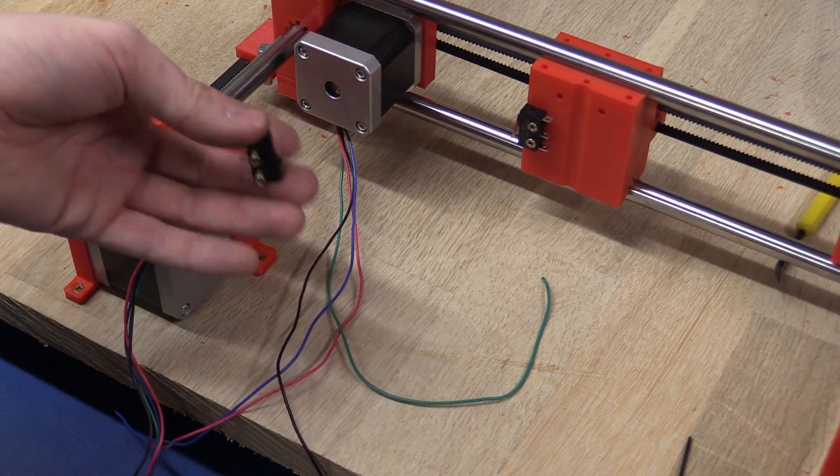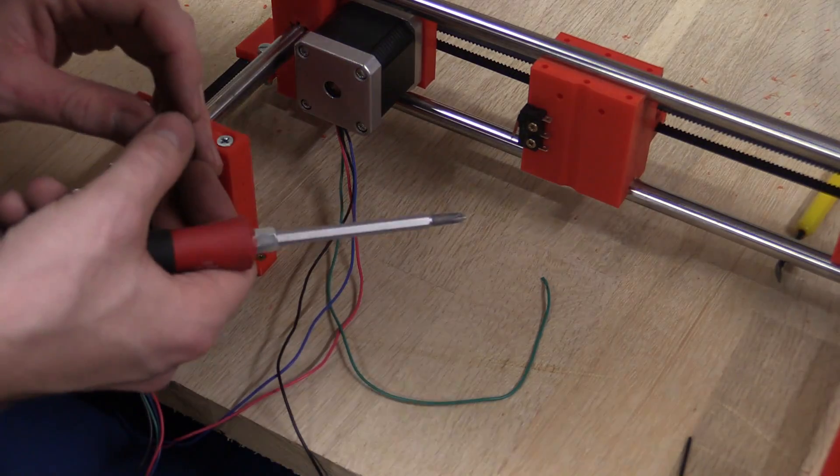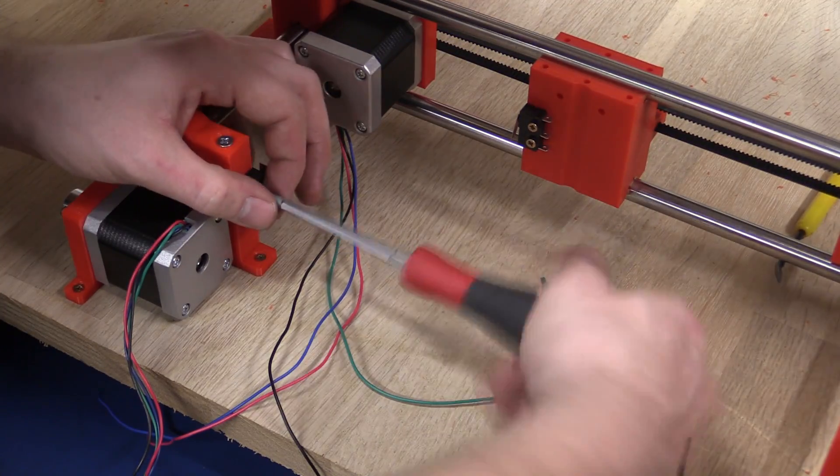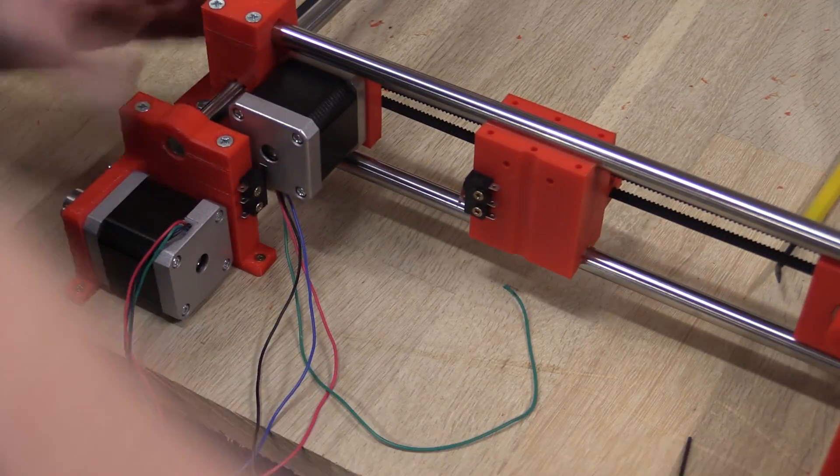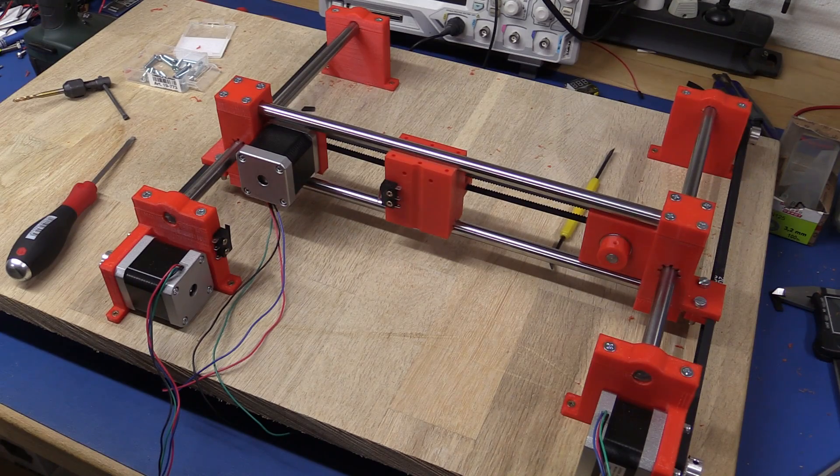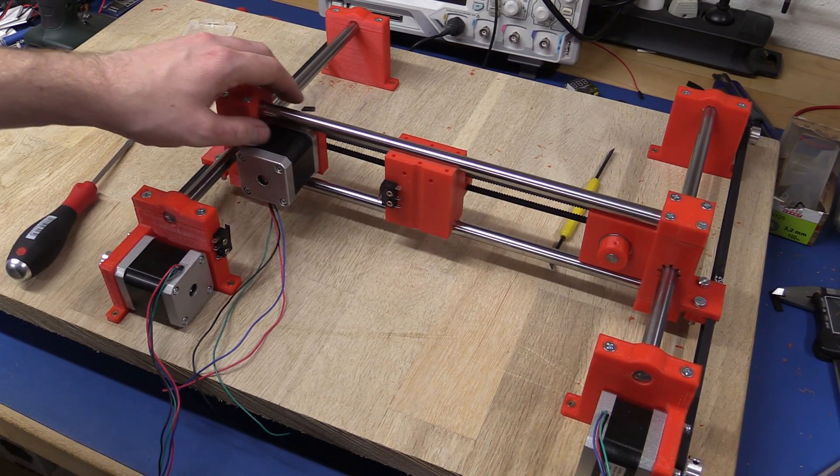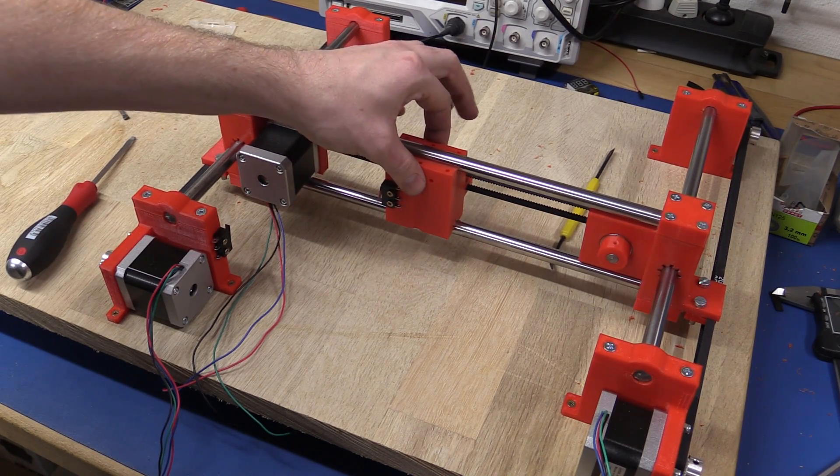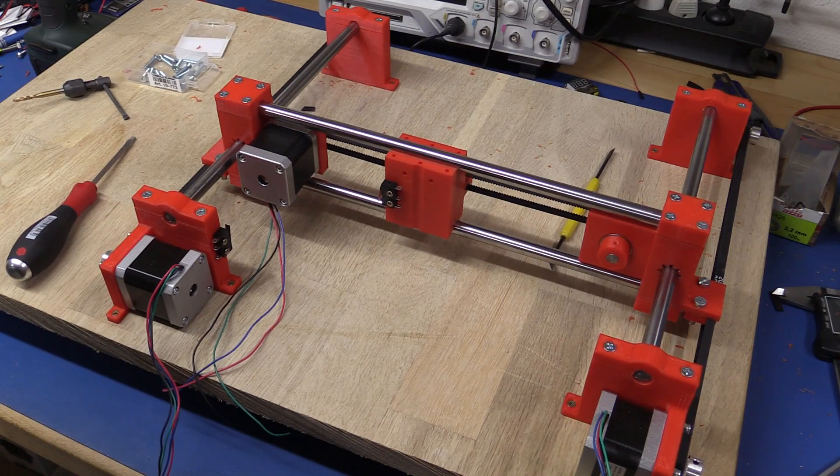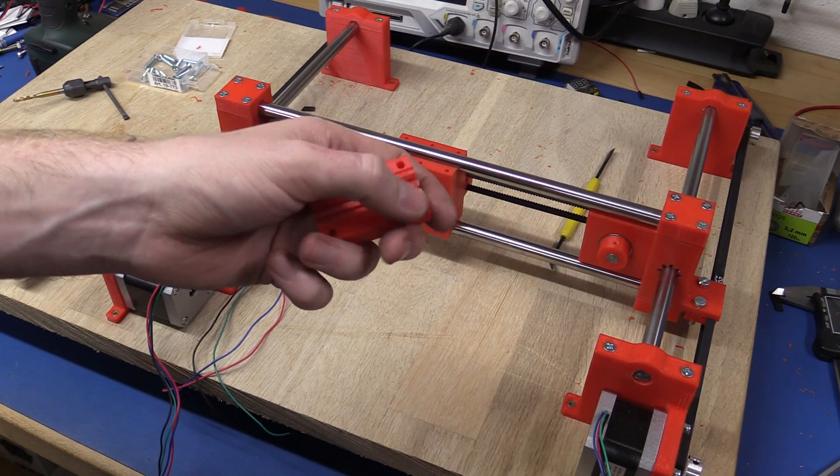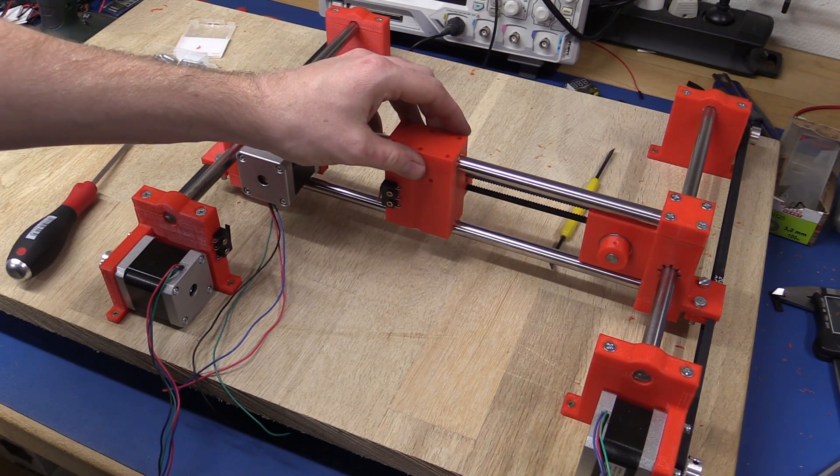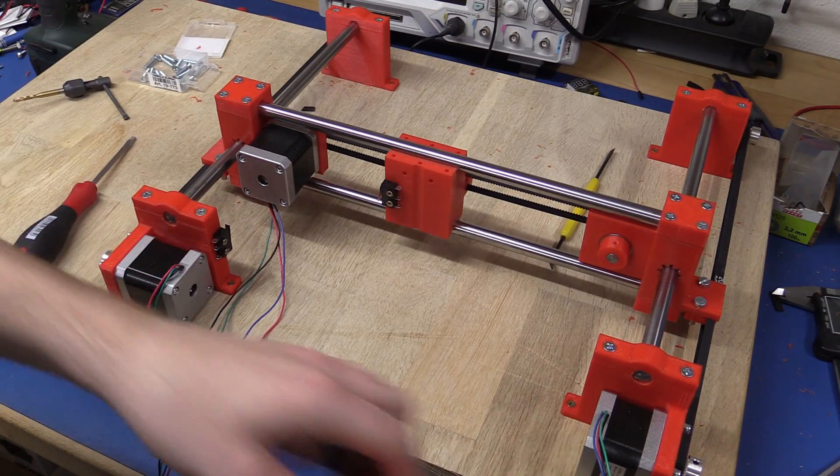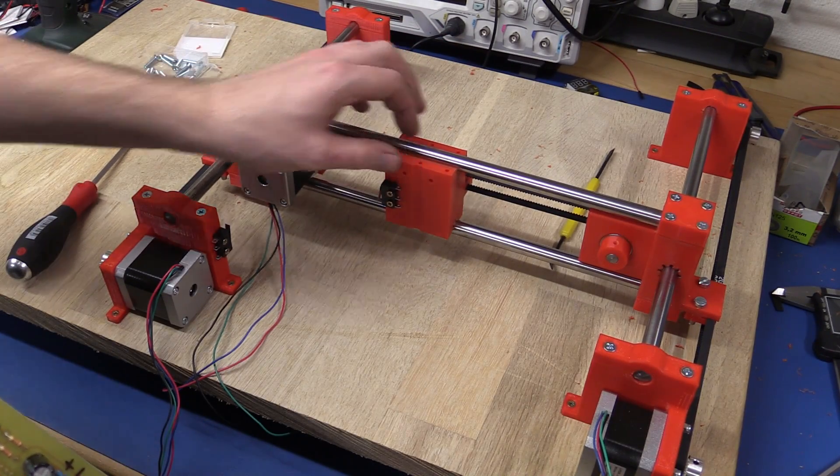And now we can install the y-axis endstop onto this block here. So I think that's all the mechanical things in place except for the top part of the x-axis block here. I have to sand those a little bit on this side here because they don't quite reach the shaft here. They are a little loose. But I'll do that later, it works fine without.